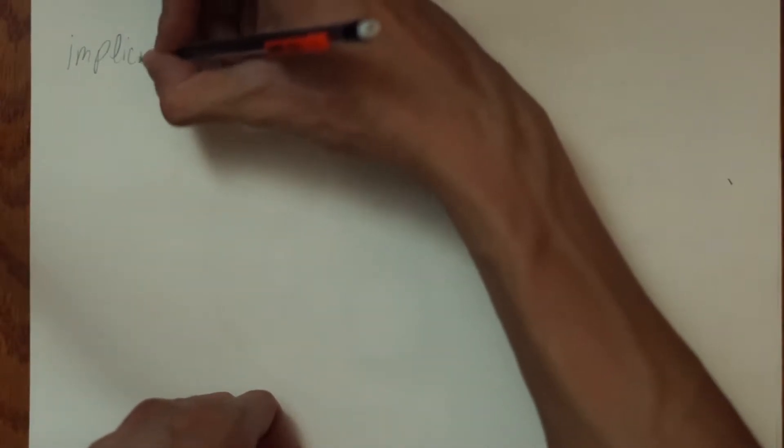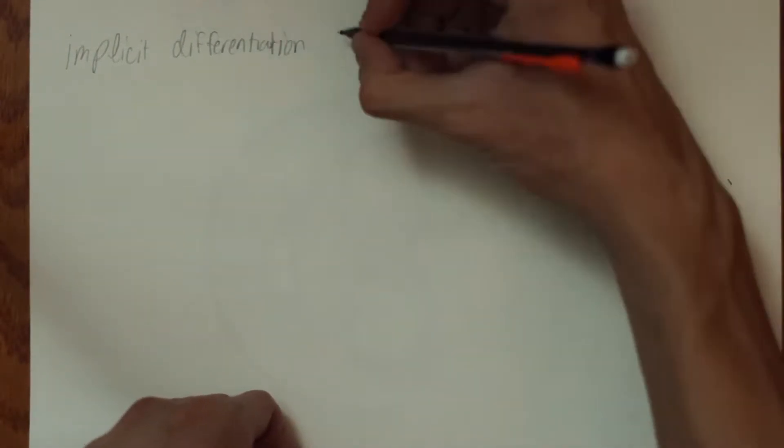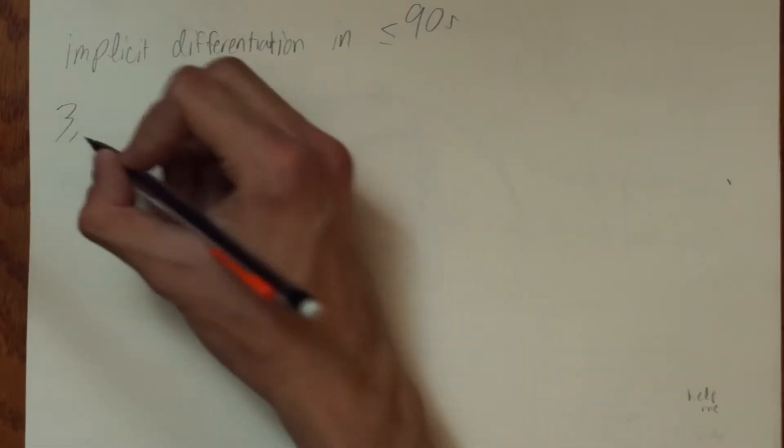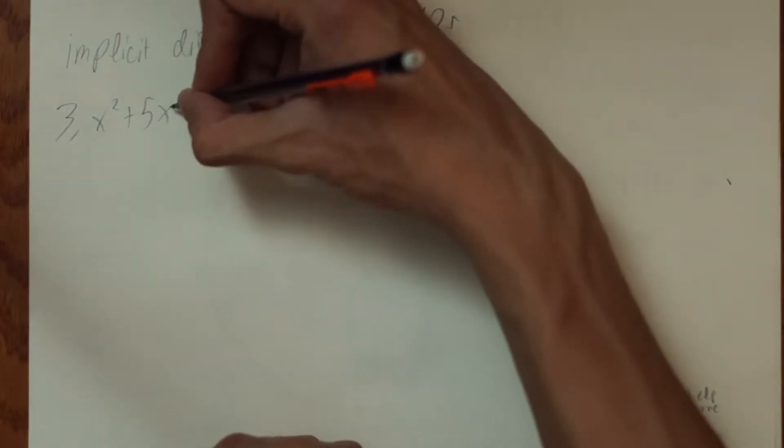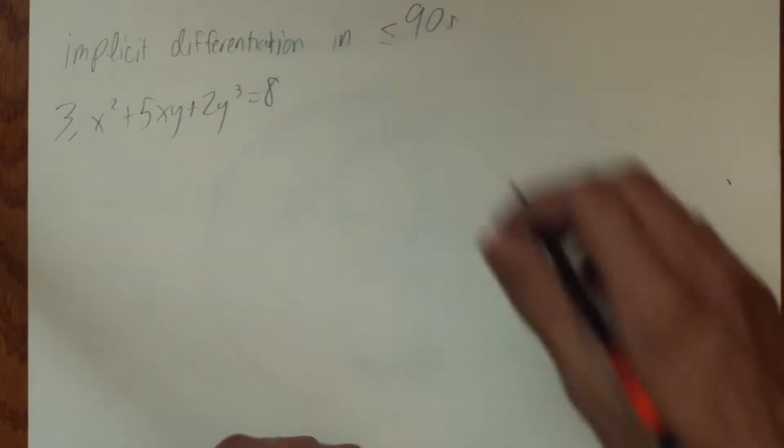Howdy everybody, welcome to Quick Maths. Today we are doing implicit differentiation in 90 seconds or less. The problem is x squared plus 5xy plus 2y cubed equals 8.